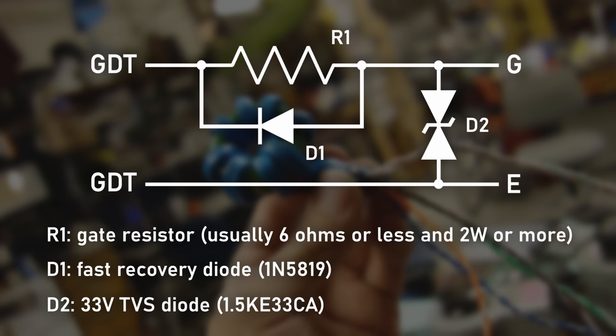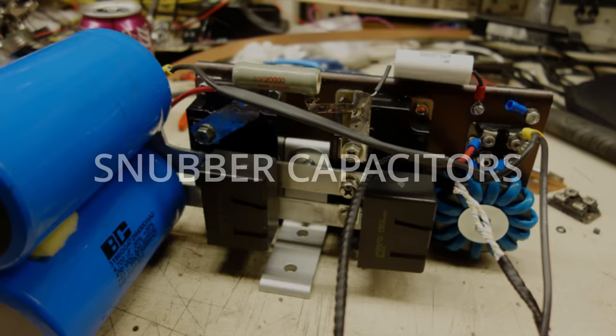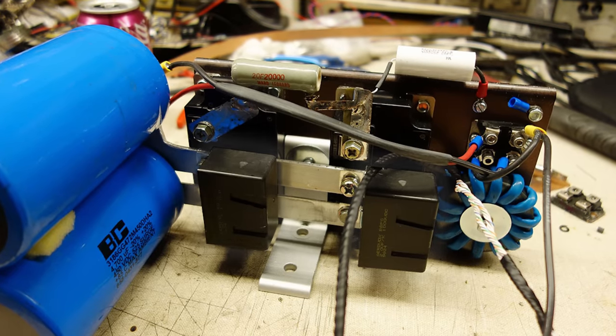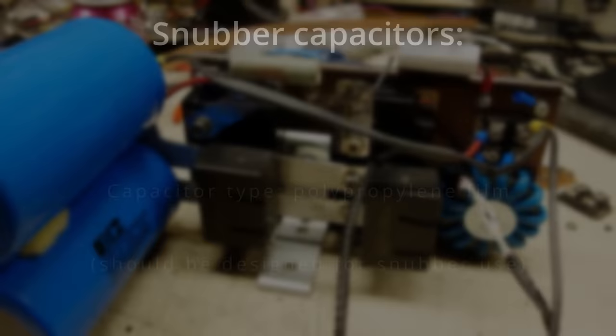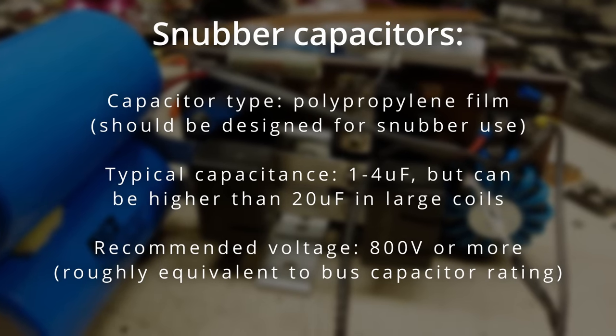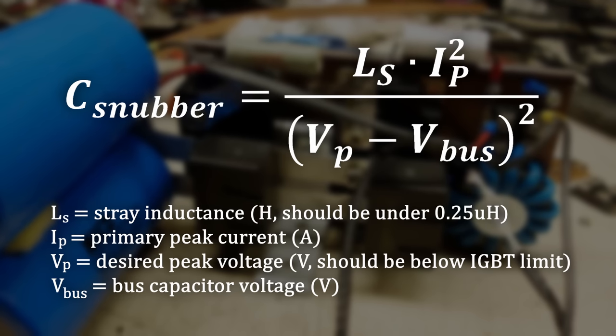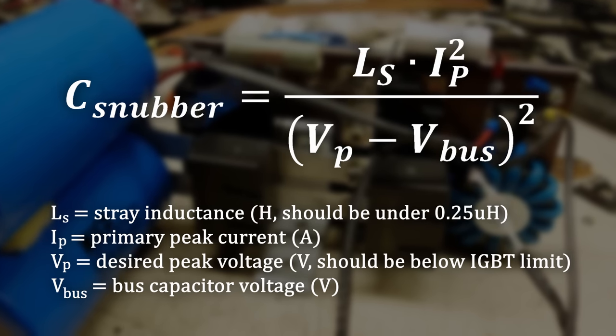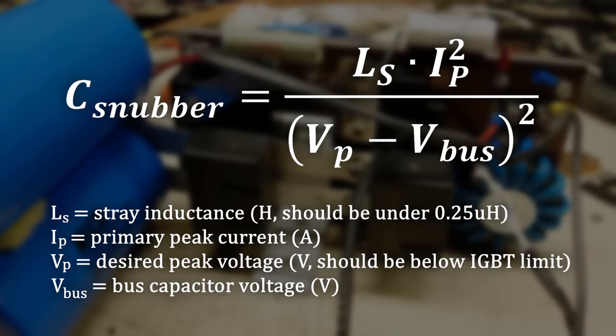Optionally, a 33V TVS diode can also be added across the gate to help stop harmful voltage transients. To protect the transistors further, large snubber capacitors are typically placed across each half bridge section. 1 to 2 microfarads is typically acceptable, although more capacitance is desired when you're running at higher peak currents. Use this equation provided by Kaeser Power Electronics to help determine a good capacity. The voltage of each capacitor should be at least a few hundred volts higher than the expected bus capacitor voltage.